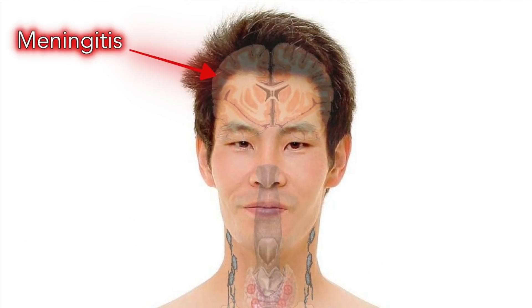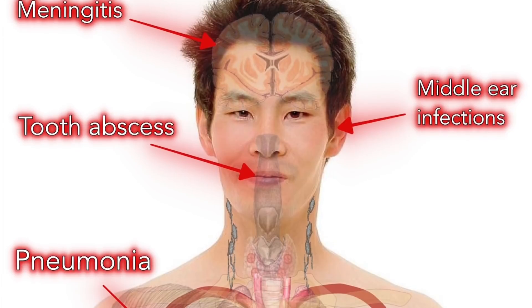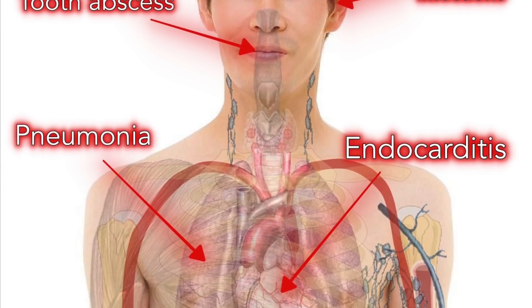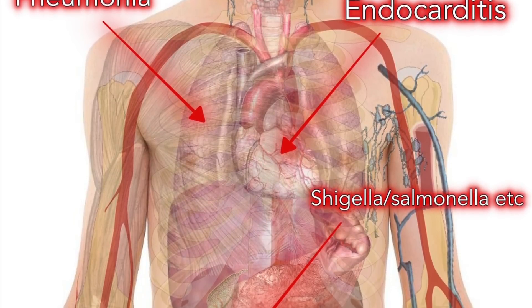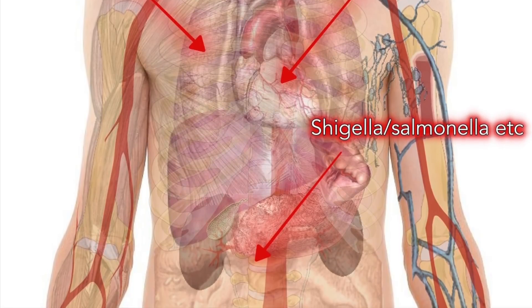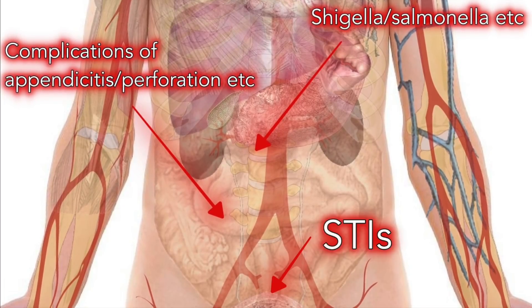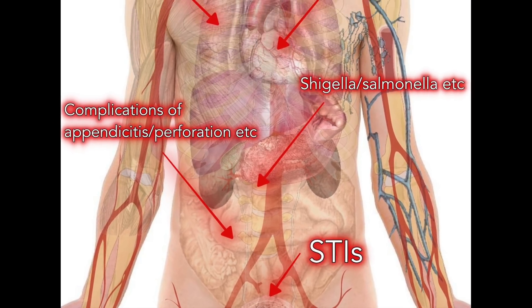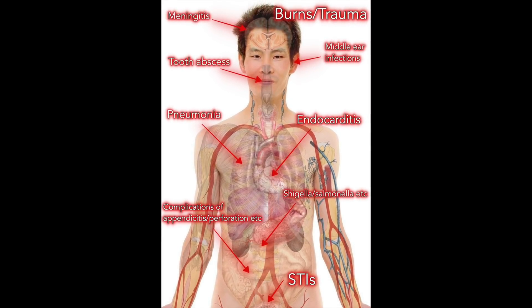There are a whole host of common infections that can lead to sepsis. For example, meningitis, severe middle ear infections, even tooth abscesses, chest infections such as pneumonia or heart infections known as endocarditis, bowel infections such as shigella or salmonella, and also other abdominal infections which can be a result of a burst appendix or a perforated colon. Sexually transmitted infections and infections which can complicate burns or trauma are all other causes. And usually when the original infection spreads beyond the initial tissues and involves our bloodstream, an inflammatory response can begin to develop.